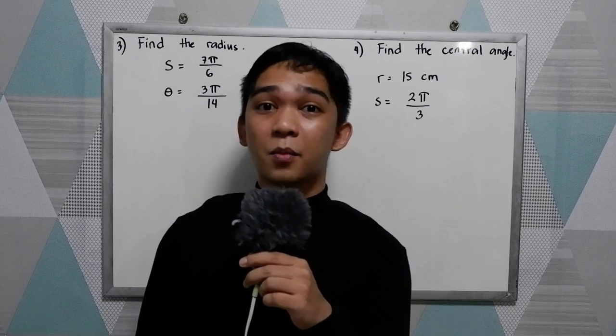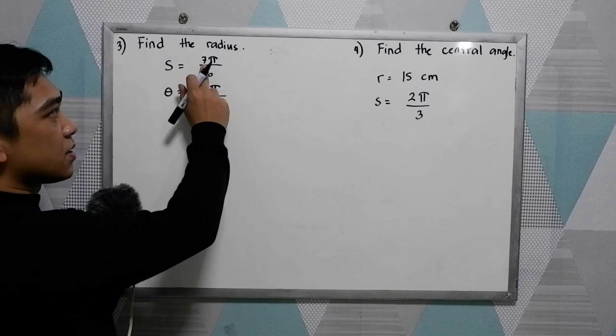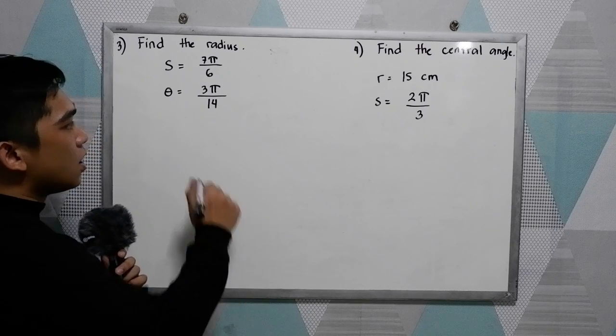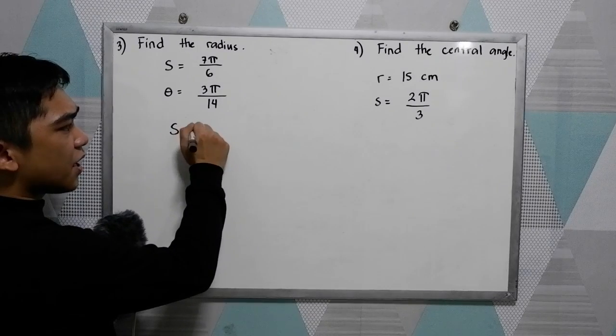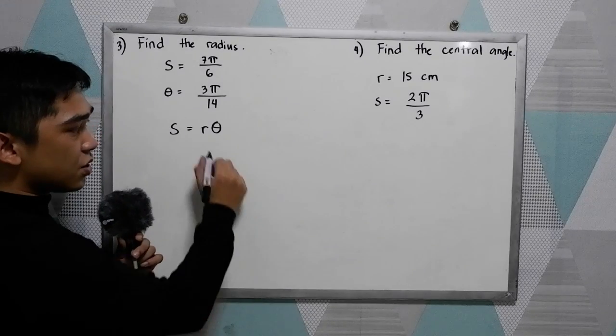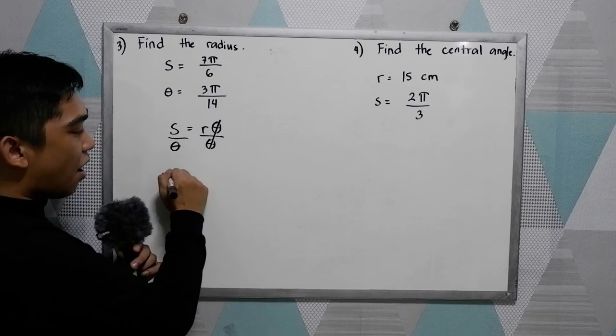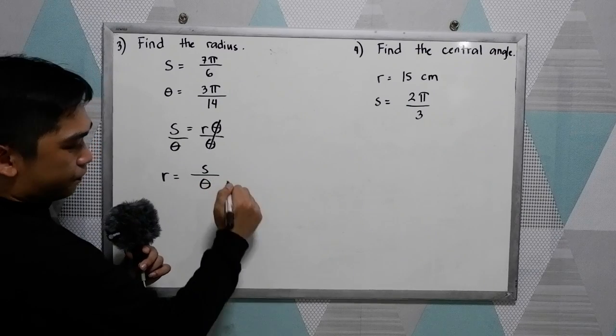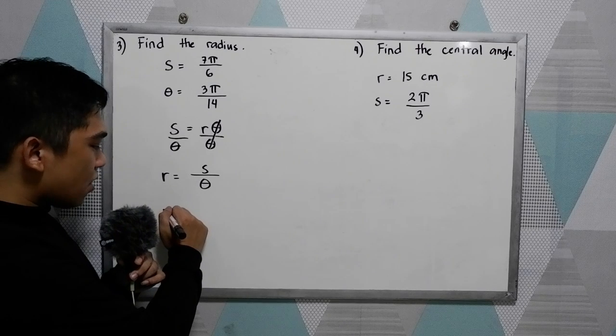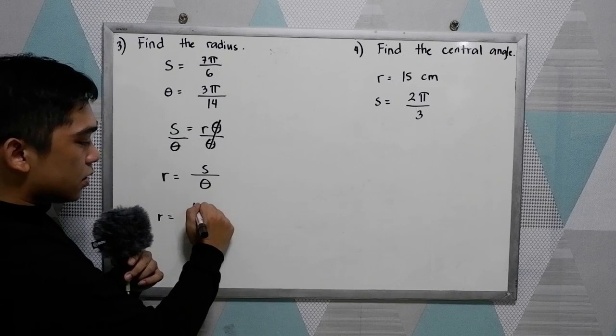Now let us proceed in our problem number 3. Find the radius given the arc length 7 pi over 6 and the central angle 3 pi over 14. So our formula is arc length is equal to r times the central angle. We need to find the radius so we need to divide by central angle or theta. Now we have r is equal to s over theta. This will be the formula that we are going to use.